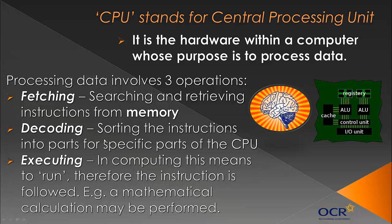It will find the instruction stored in memory, then decode it - meaning it sorts it into parts. Like when you get a complex problem in an exam, you split it up into different parts to make it simpler. A complex instruction will be split into different blocks in the CPU, each designed to do a specific function. Then it executes it - executing in computer science means to run. All the different decoded parts come together and the instruction is processed. For example, if the instruction is to calculate 4 plus 5, the execution will result in 9 being outputted from the CPU.